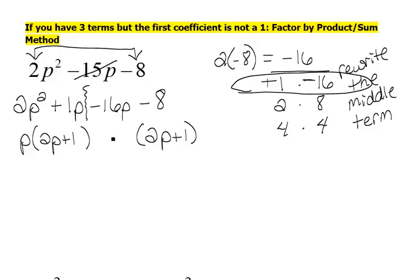Well, in order to make that happen, we'd have to factor out a negative 8, because negative 8 times 2p is negative 16p, and negative 8 times 1 is negative 8.